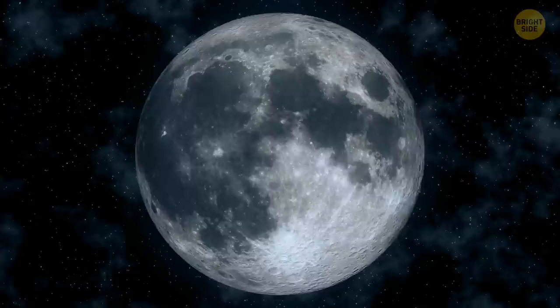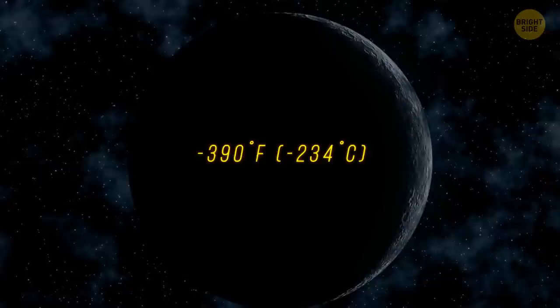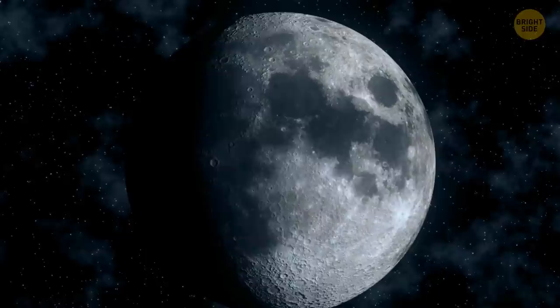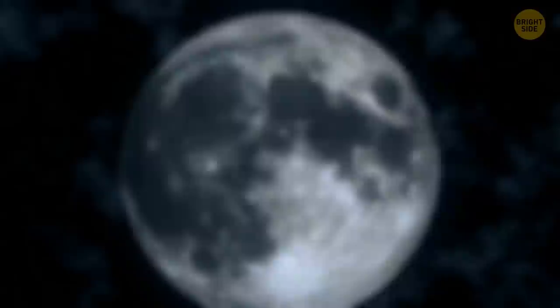Since the moon doesn't have an atmosphere, nothing protects it from extreme temperatures. It gets incredibly cold on the night side, minus 390 degrees Fahrenheit. Meanwhile, the sunny side is literally boiling, with a temperature of 250 degrees Fahrenheit.